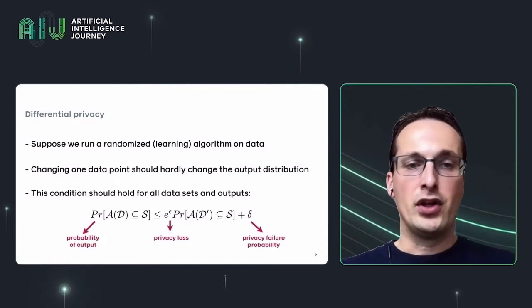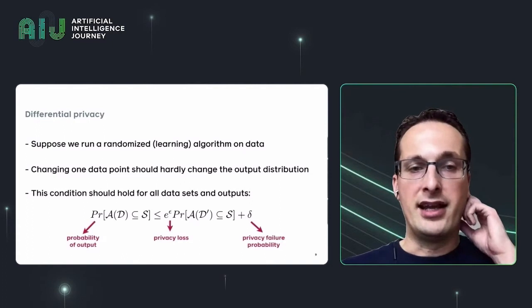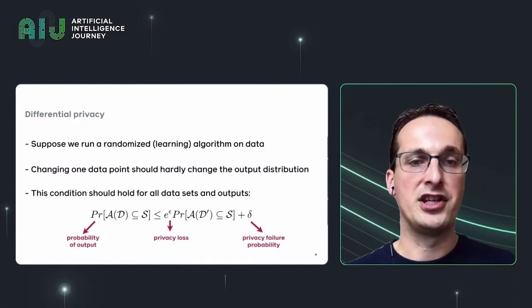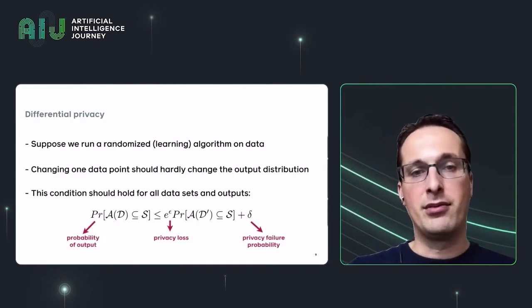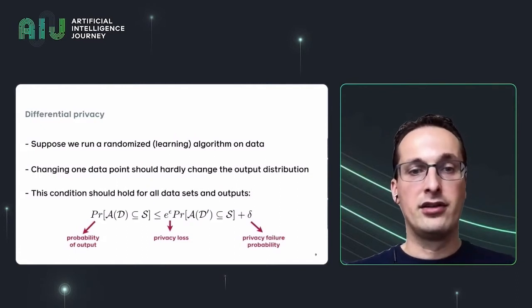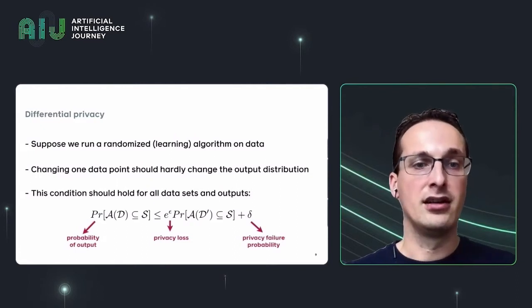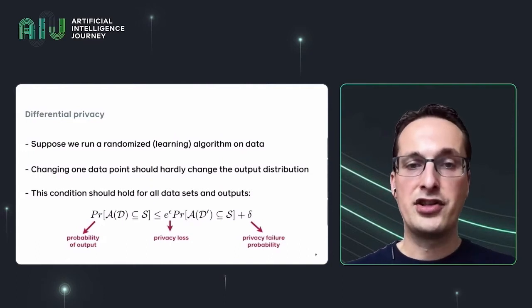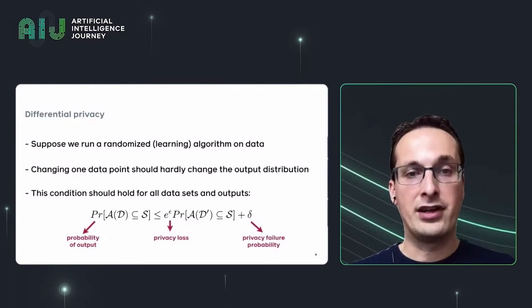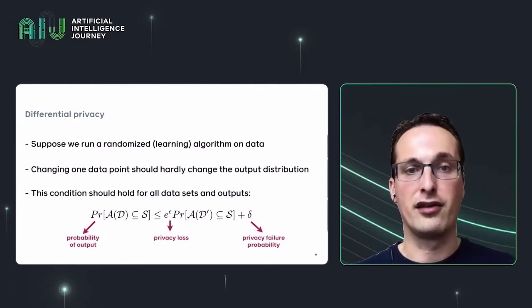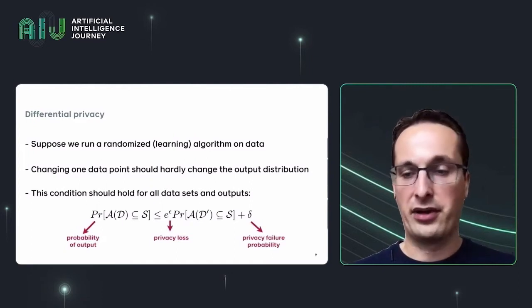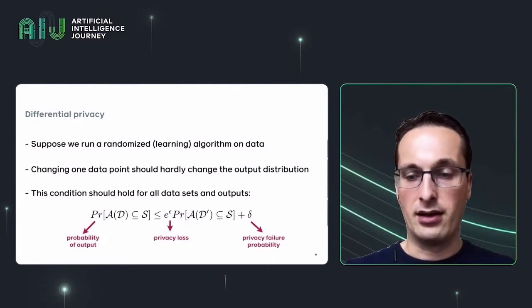What this is saying is that even if, as an adversary, you know all the data in D with the exception of one example — the one example that we're changing — even then you would not be able to infer with high probability whether or not that one training example was part of the training data or not. This is a very strong definition of privacy where you give the adversary a lot of power, and as a result it's become the standard for measuring privacy in machine learning.